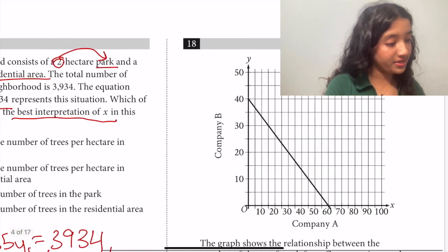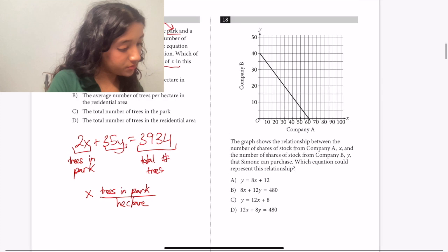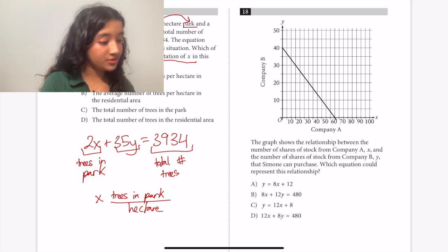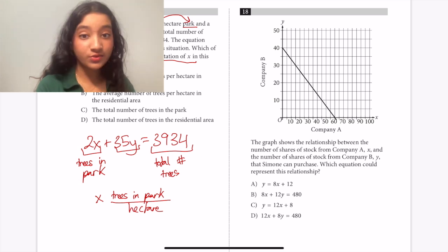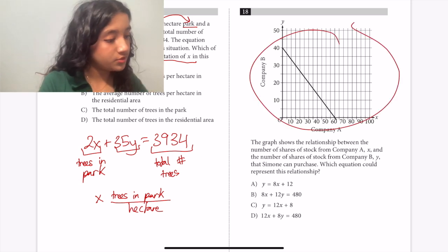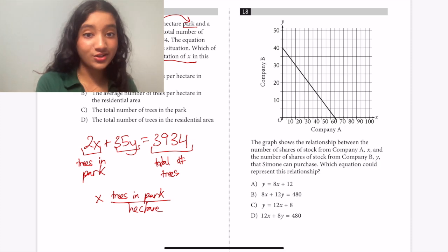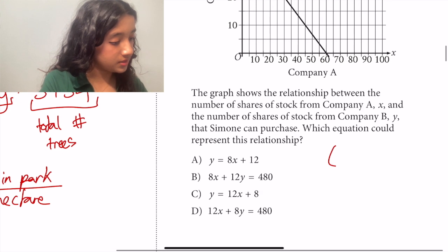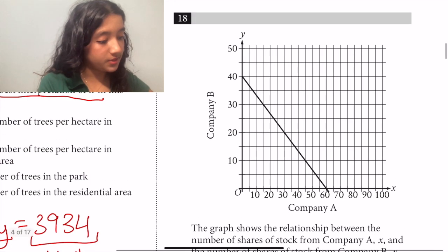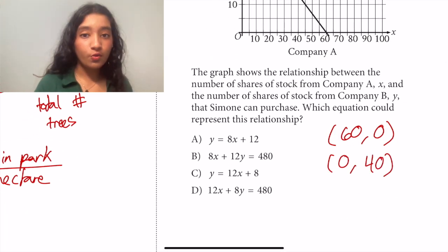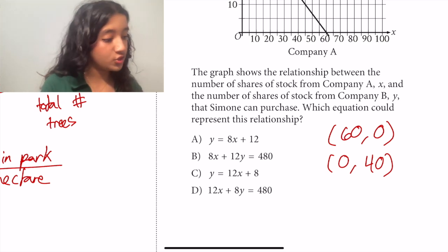Moving on to question 18, we have the graph shows the relationship between the number of shares of stock from company A, x, and the number of shares of stock from company B, y, that Simone can purchase. Which equation could represent this relationship? So we don't want to worry too much on this wordy part that they gave us because they gave us a graph here and we can get all of our information from it. So first let's focus on something easy to identify, the x and y intercepts. So the x-intercept, which means that y is equal to 0, is 60 comma 0, and we also have our y-intercept up here which is when x is equal to 0, so that's 0 comma 40. So we can look at our different answer choices and see if there are any we can eliminate that don't contain these points.